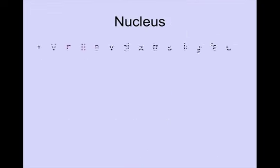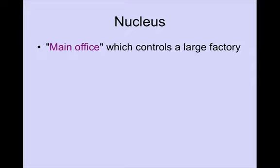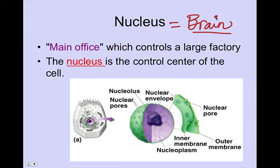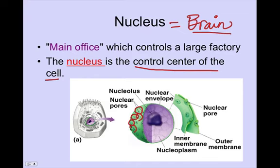We're going to start with the nucleus. Sometimes the nucleus is called the main office — if we're comparing the cell to a factory, the main office controls everything. Think about it as the main office in a school building. I also refer to the nucleus as the brain of the cell, because without the nucleus, things aren't going to occur within the cell. The nucleus is the control center of the cell and it kind of resembles a golf ball, because it has all these tiny little pores for things to pass through from the center of the nucleus out to the cytoplasm.